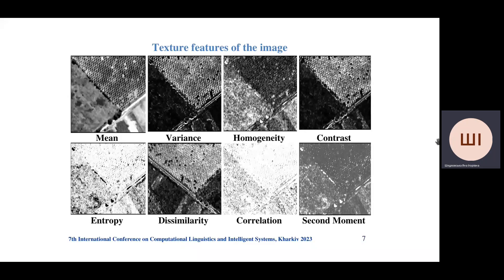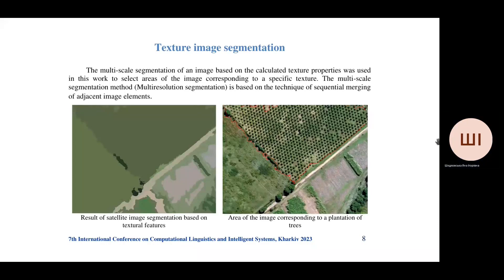Based on the calculated gray level co-occurrence matrices, the following textural features were calculated. Multi-scale segmentation of the image based on the calculated texture properties was used to select areas of the image corresponding to a specific texture. The figure shows the result of segmentation of the satellite image based on its textural features. The segments belonging to the texture corresponding to a plantation of trees are separated using supervised classification methods. This is the result of tree plantation identification shown in the right figure.